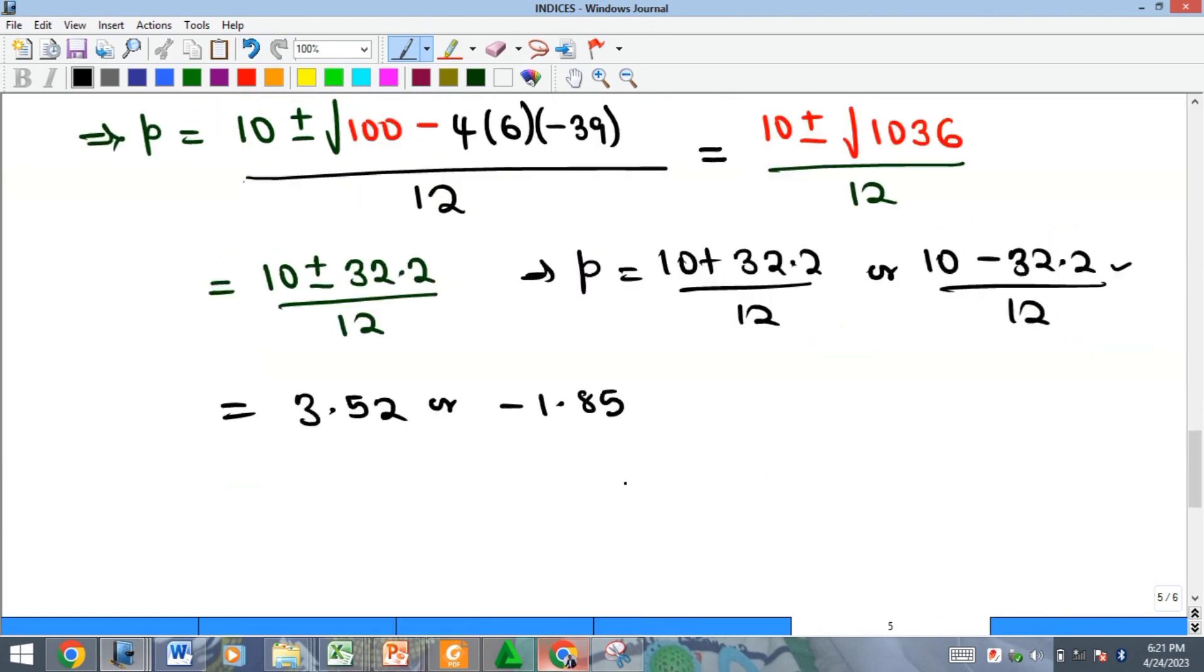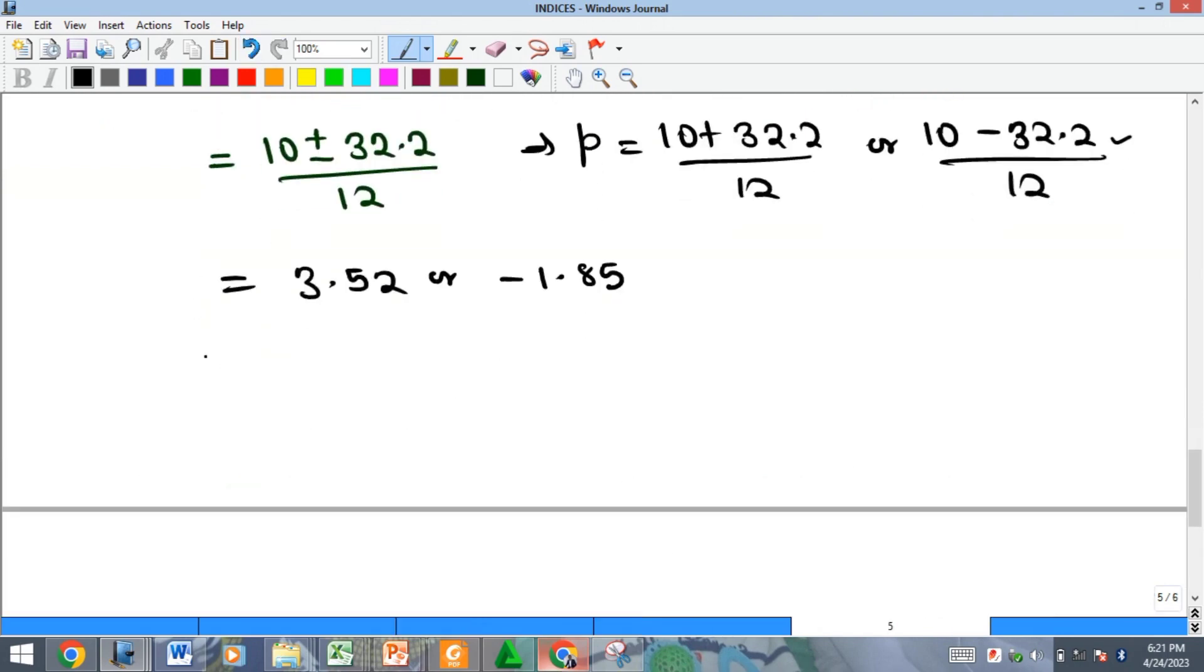Our p can only take one of the values here. In other words, our p is simply 3.52 because it can only be positive.